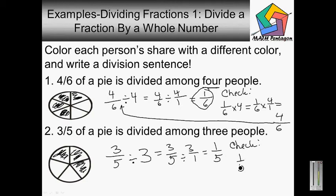1 over 5 times 3. And 1 over 5 times 3 over 1 equals 1 times 3 is 3, and 5 times 1 is 5.